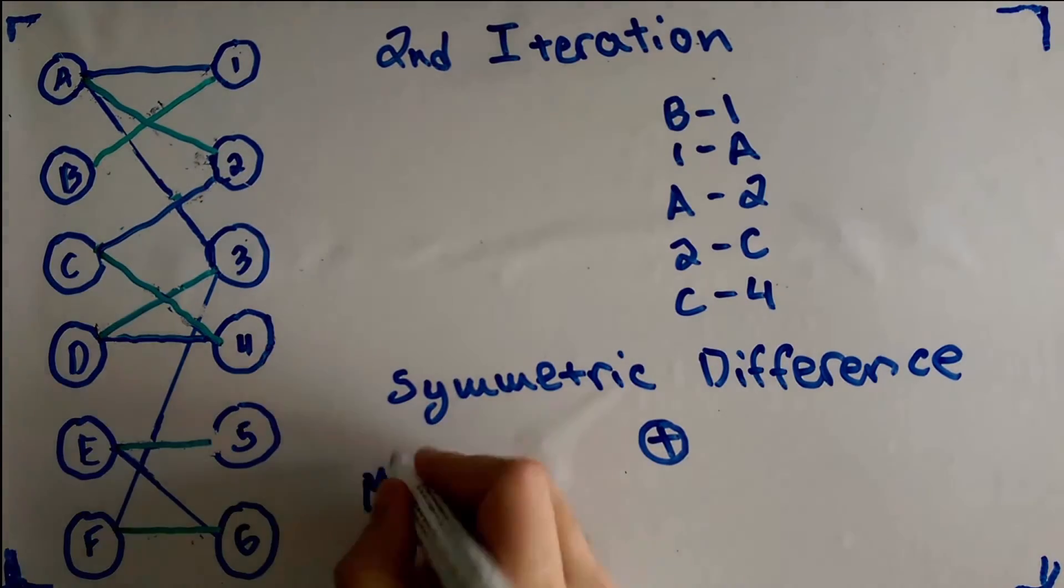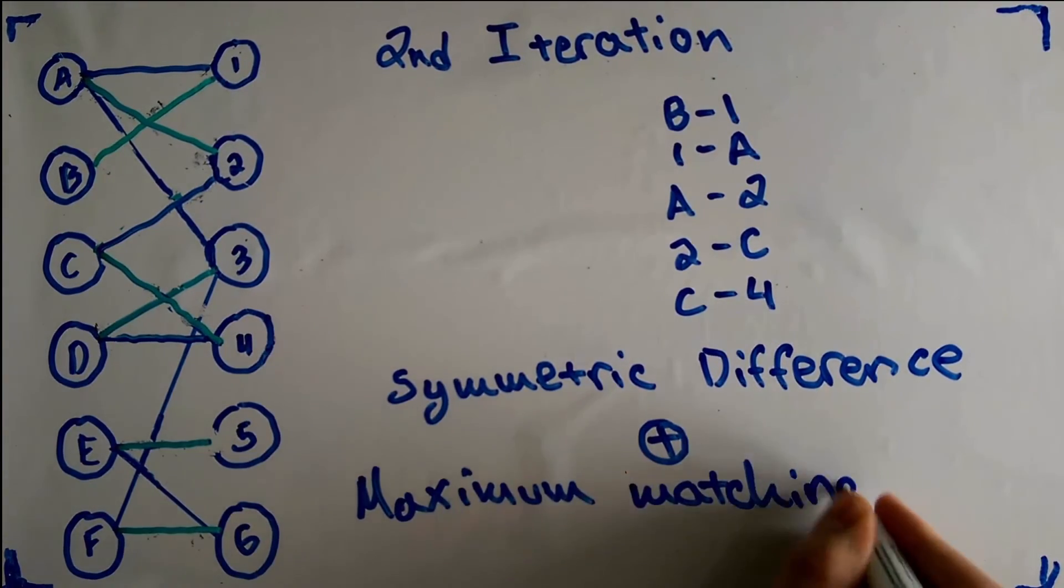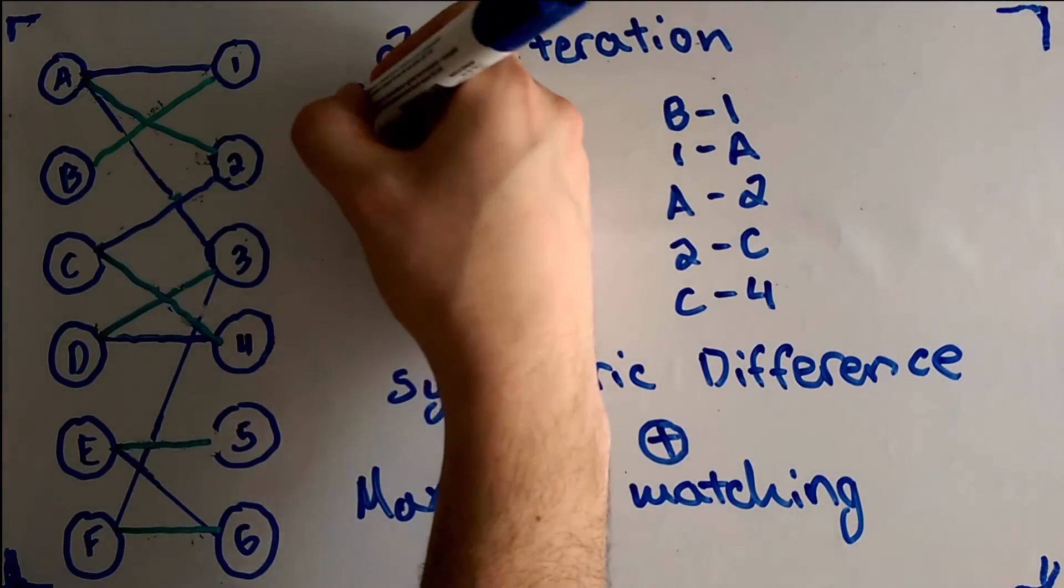In this example, the algorithm needed two iterations to finish and it resulted in a perfect matching. All vertices from the first set are connected to all the vertices in the second set.